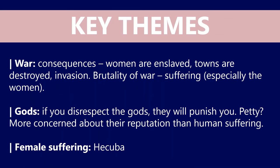Let's have a look at some key themes in this section. The first one is obviously war — Poseidon outlines and describes the consequences of war for the victims: women being enslaved, the men being killed, towns being destroyed, temples being desecrated. It also outlines the brutality of war, particularly the suffering of the women. We also take note that the gods play an important role — they are of course the two characters who speak in the prologue, and the message is that if you disrespect the gods they will punish you. If they feel they have been affronted, they will seek vengeance — a very human emotion, this feeling of wanting revenge. The last theme is female suffering.